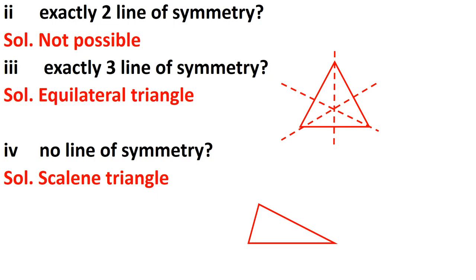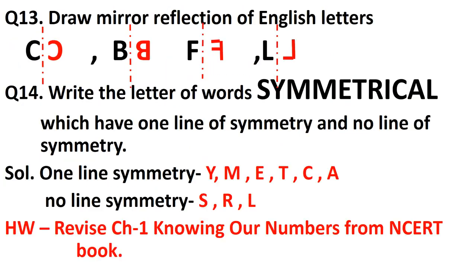Question number thirteen: draw the mirror reflection of the following English letters — C, B, F, and L. The letters drawn in red are the solution. Each letter carries one mark, so question number thirteen is also a four-mark question.